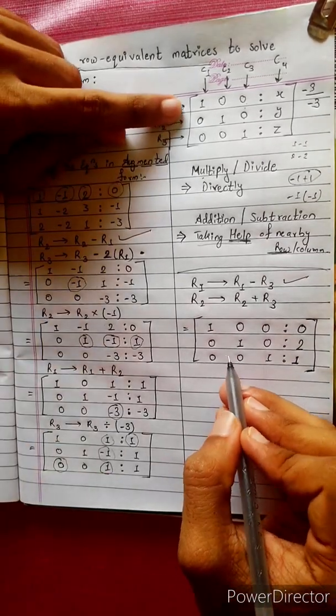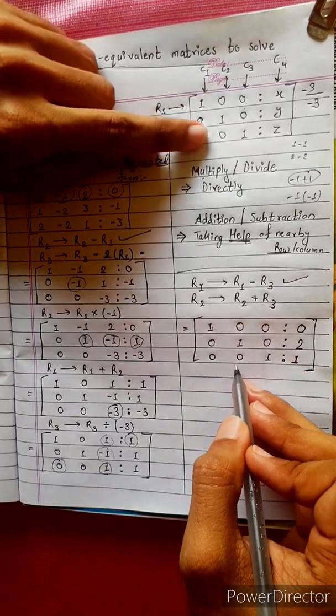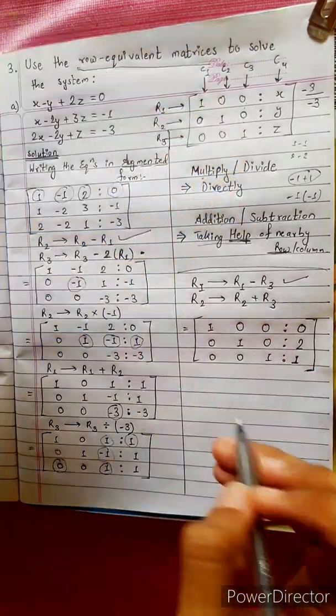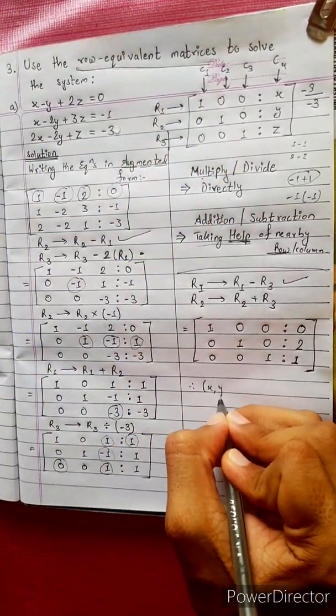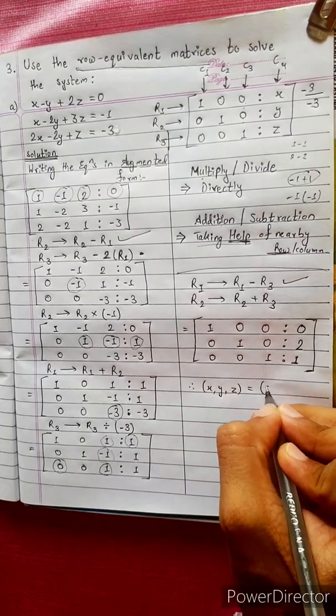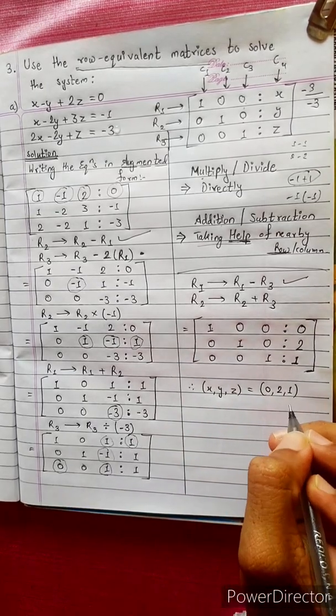The result is the identity-like matrix. Therefore, x, y, z equals 0, 2, 1.